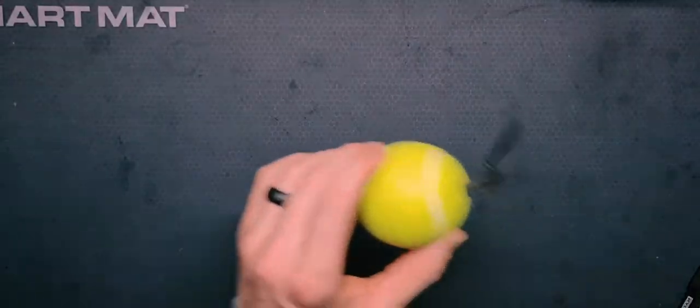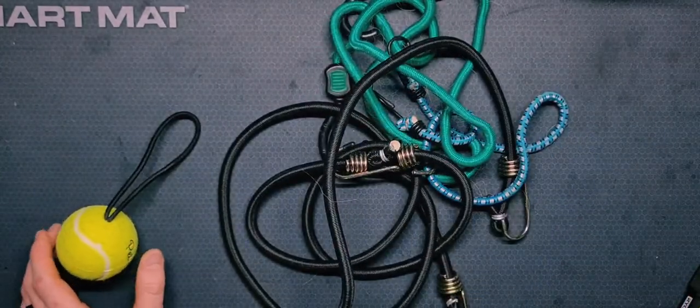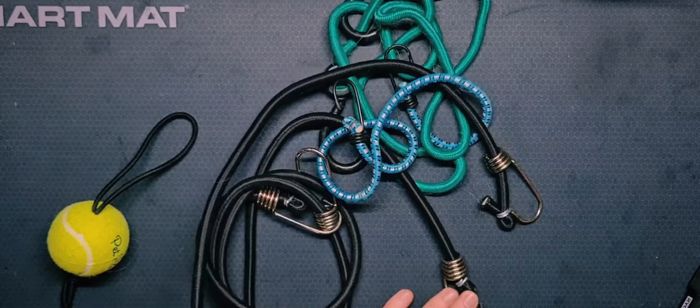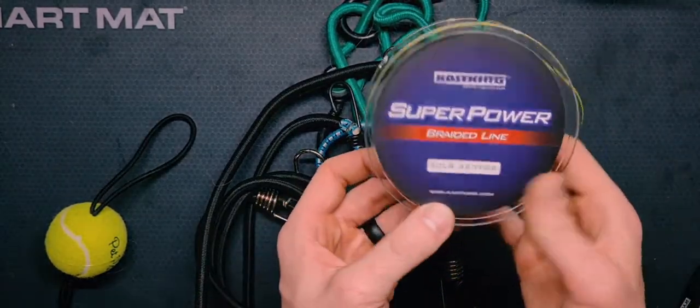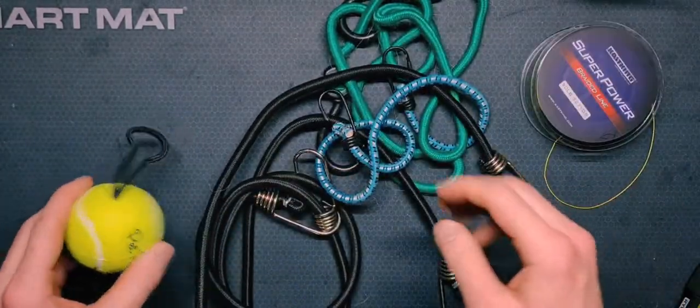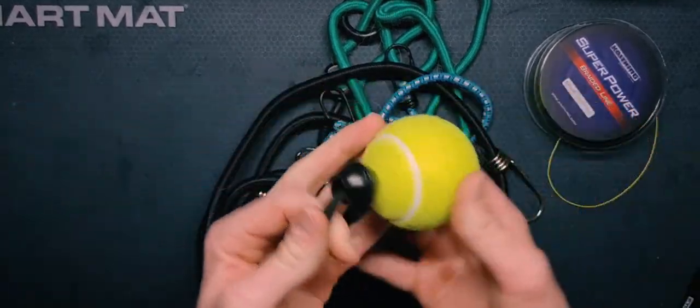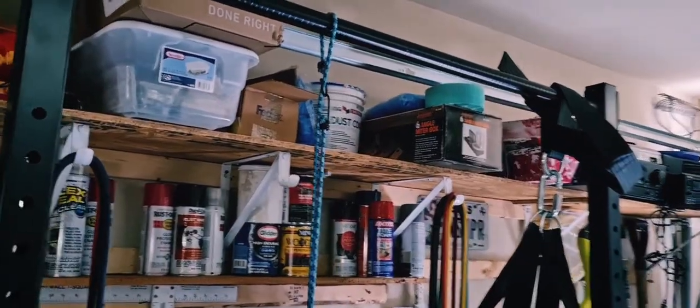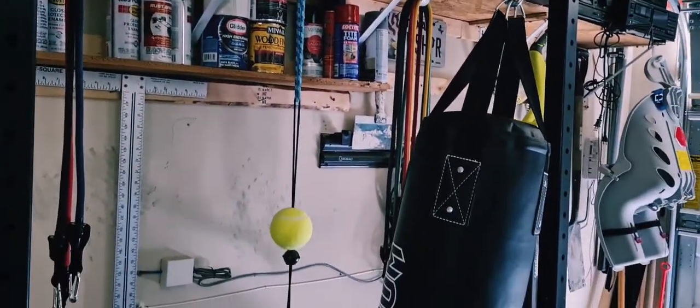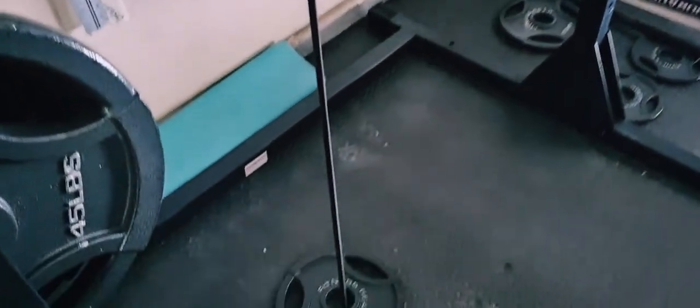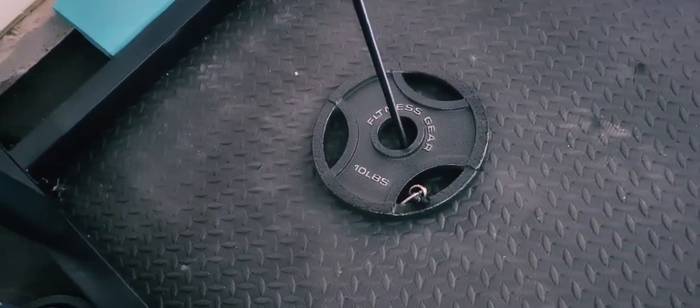Then you just use whatever kind of paracord or bungee cord or even a braided line for fishing can work. You still got this flex right here. This is how I have mine set up, and it's attached to a 10-ton flake down there.